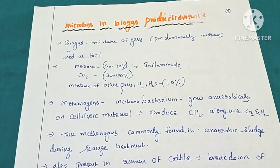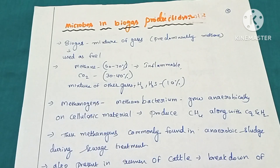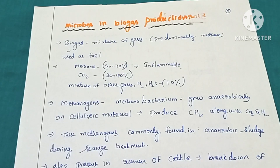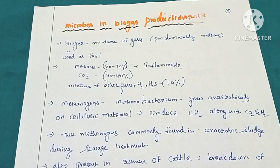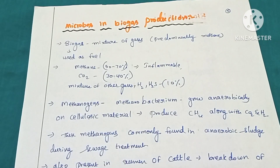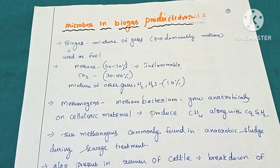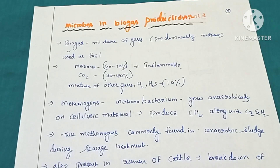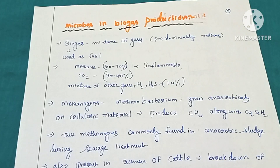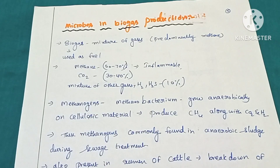Hello everyone, this is Lata Akula. In this video we are going to study about microbes in biogas production. In the last video we studied about sewage waste treatment, where we studied how sewage water is treated and the sludge formed is treated in anaerobic sludge digesters. We studied that there are some methanogenic bacteria which convert that solid matter into biogas.